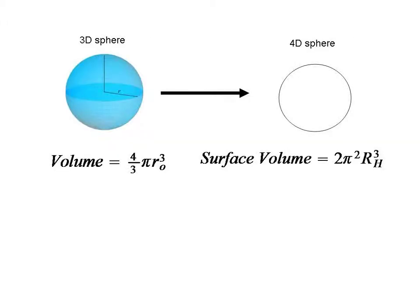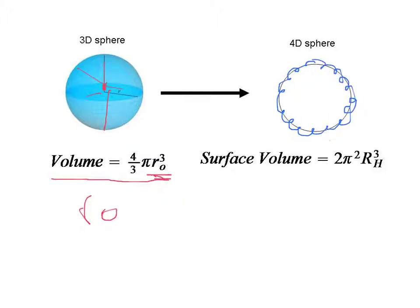The volume for a 3D sphere is four-thirds times pi times the radius cubed, and this is r sub o. In our universe, we're located in the center of the sphere. In every direction we look, we can see a certain distance — the same distance — and that's the radius of the observable universe, r sub o. The surface volume of a 4D sphere is 2 times pi squared times r cubed, and this is r sub h, the radius of the hyperverse. This is a different radius than r sub o, so r sub h is not equal to r sub o.